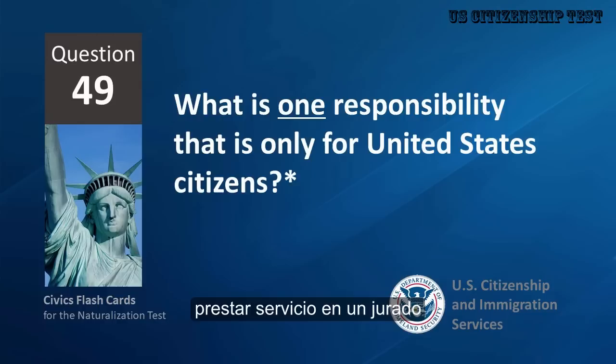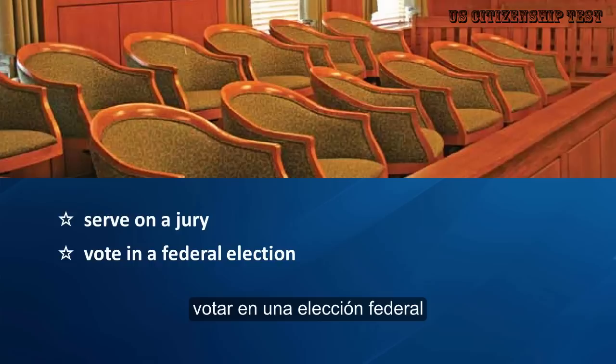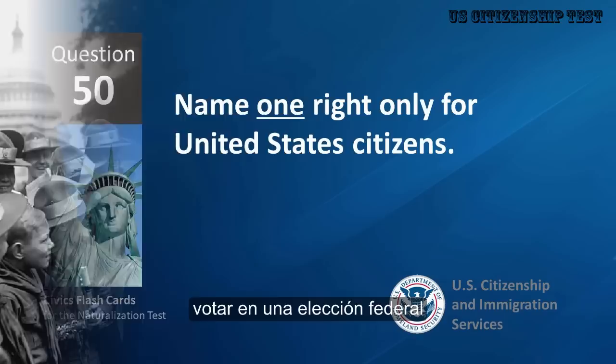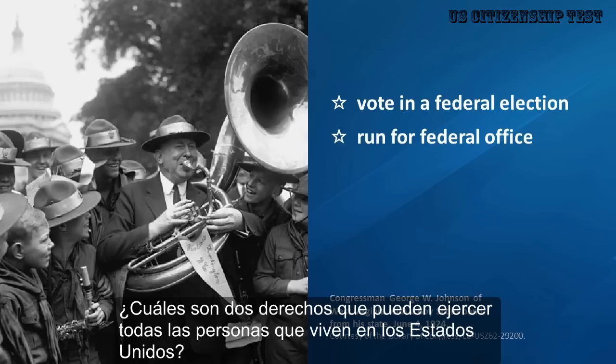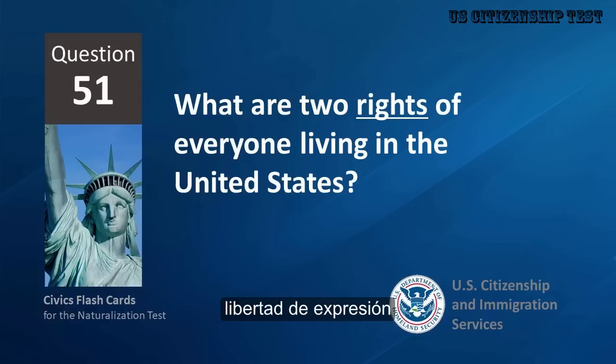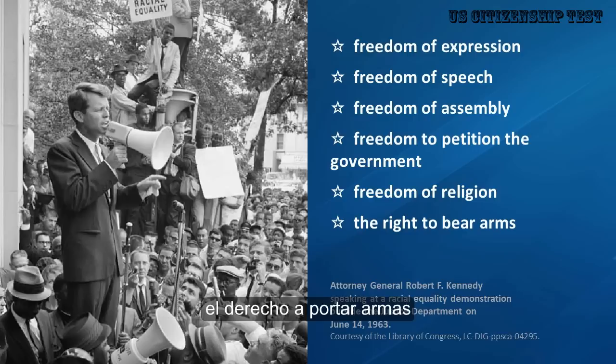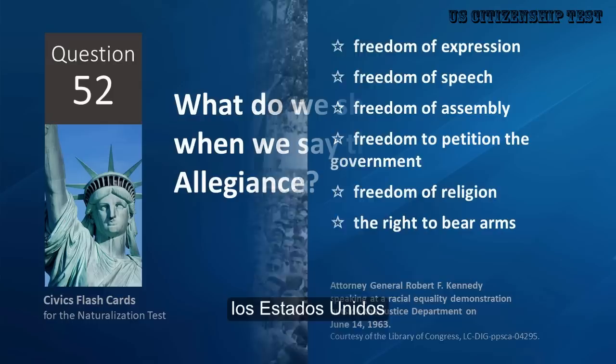What is one responsibility that is only for United States citizens? Serve on a jury, vote in a federal election. Name one right only for United States citizens. Vote in a federal election, run for federal office. What are two rights of everyone living in the United States? Freedom of expression, freedom of speech, freedom of assembly, freedom to petition the government, freedom of religion, the right to bear arms.